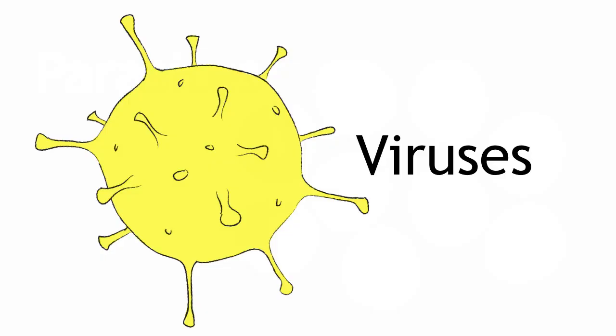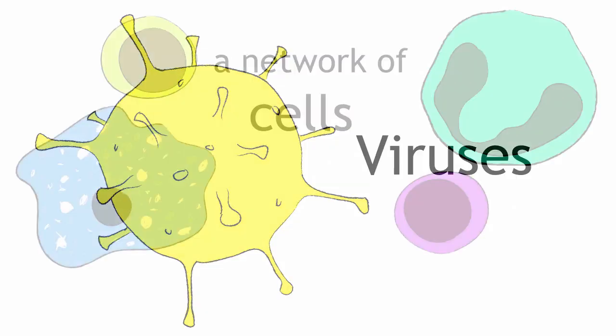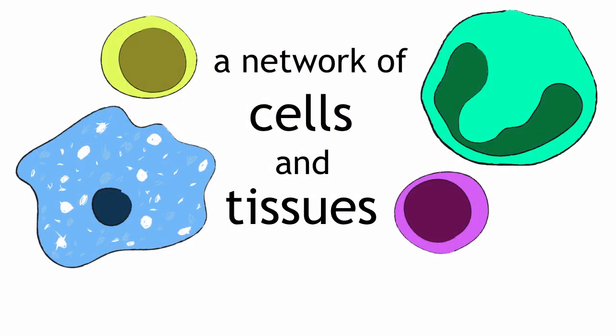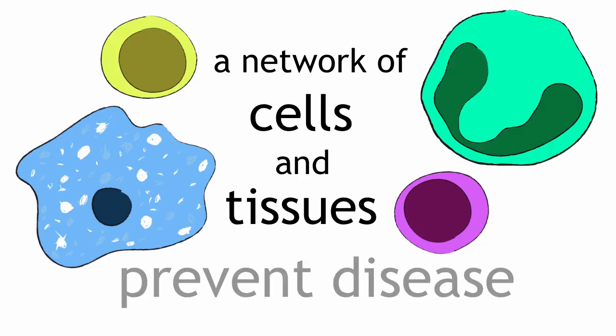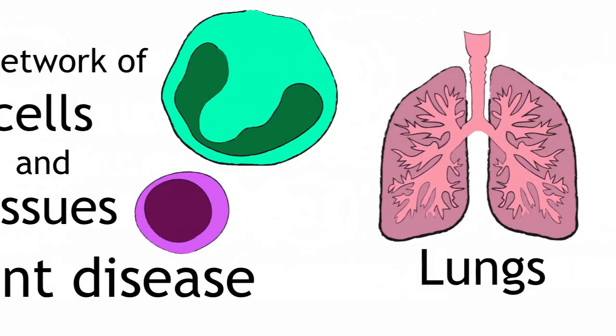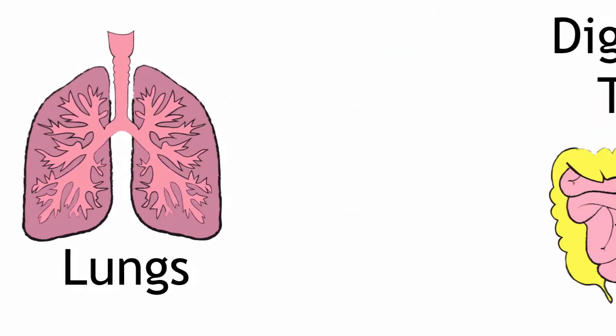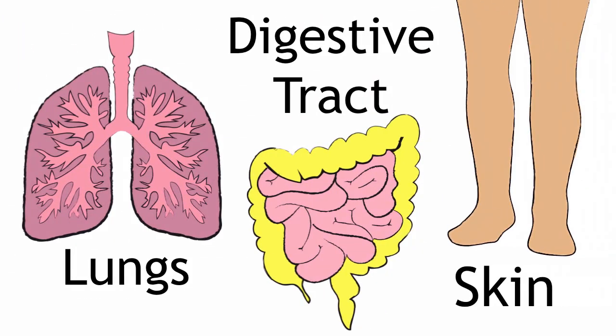The immune system comprises a network of cells and immune tissues that work together to prevent the development of disease. All parts of the body that interface with the environment, such as the lungs, the digestive tract, and the skin, have to be prepared to protect the body from infection.